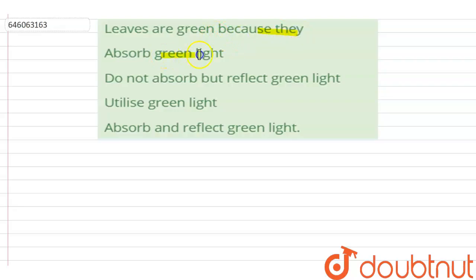are green because they... The options are: absorb green light, do not absorb but reflect green light, utilize green light, and absorb and reflect green light. Leaves are green because they have chlorophyll in the chloroplasts, which is a green pigment.